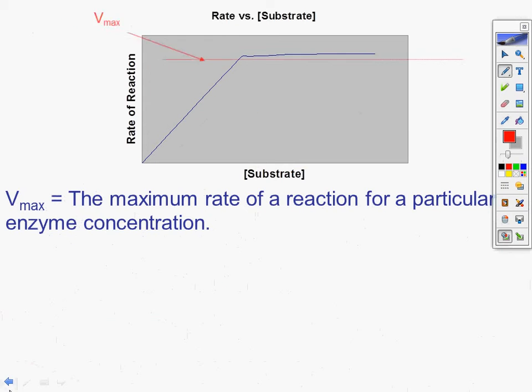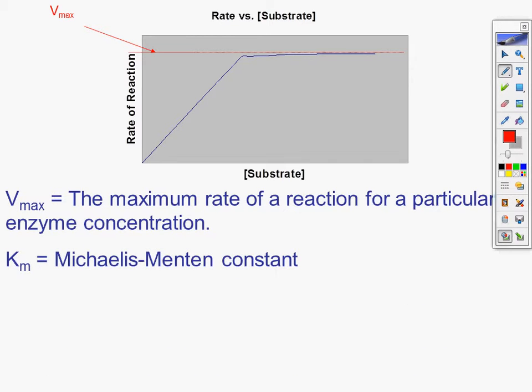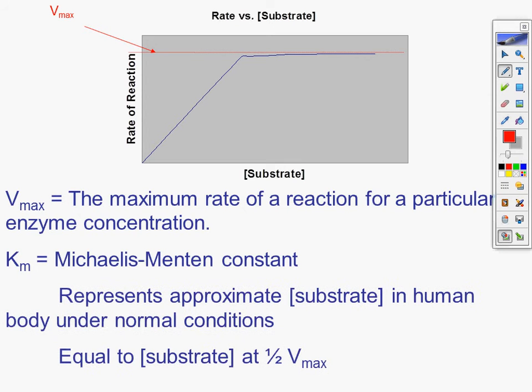Vmax, the maximum rate of reaction of a particular enzyme concentration. There's my Vmax. Km is the Michaelis-Menten constant. And that represents approximate concentration of substrate in the human body under normal conditions, equal to the concentration of substrate at half of Vmax. So you have to draw your line on Vmax, figure out what number it corresponds to, and then divide by two to get normal body conditions. And that's all. You just draw the line, boom, and figure out Km.